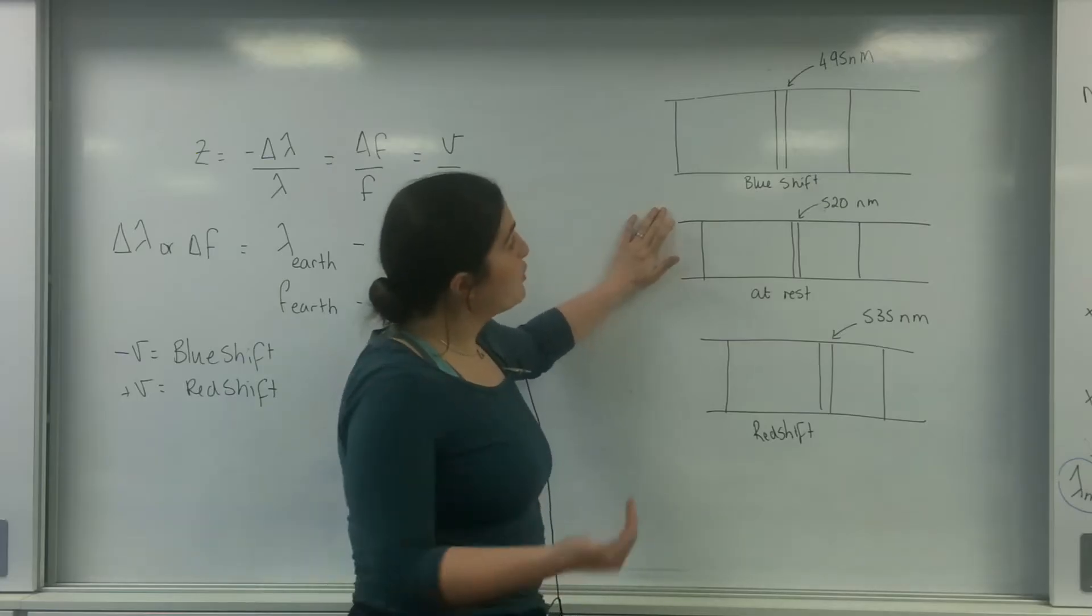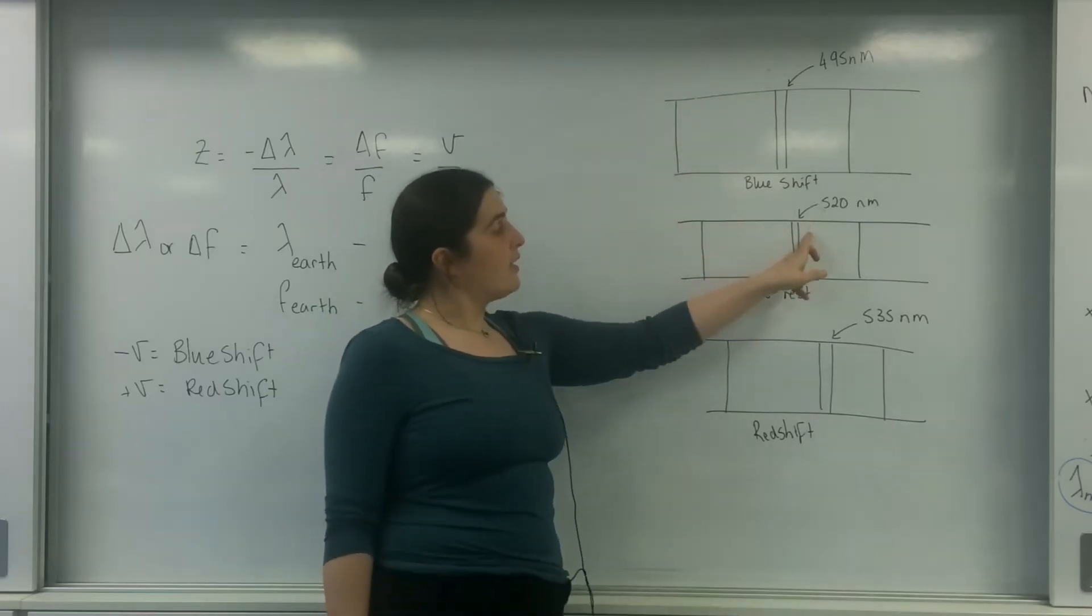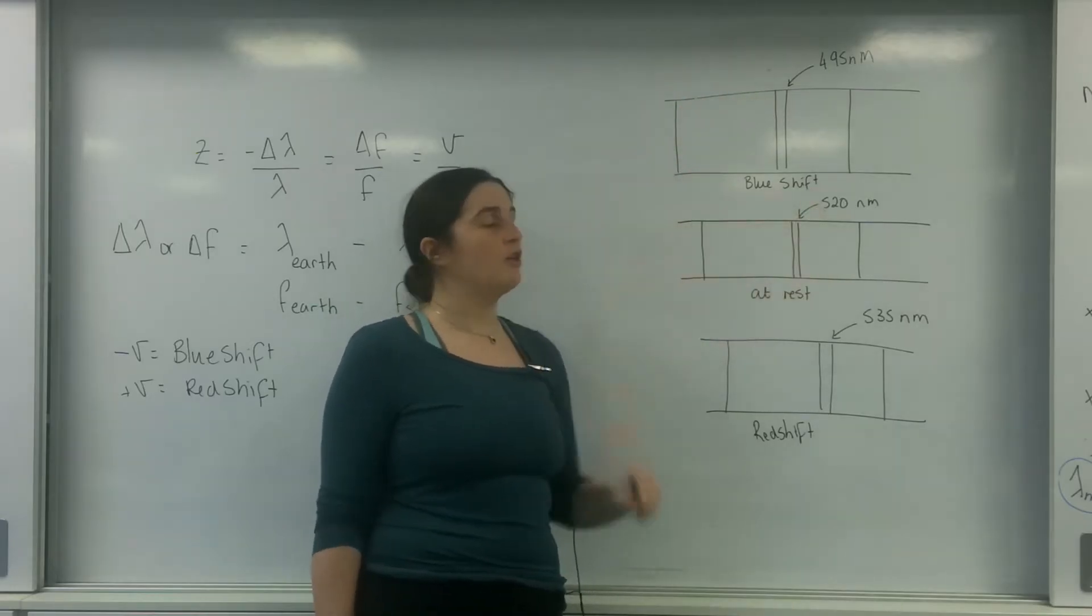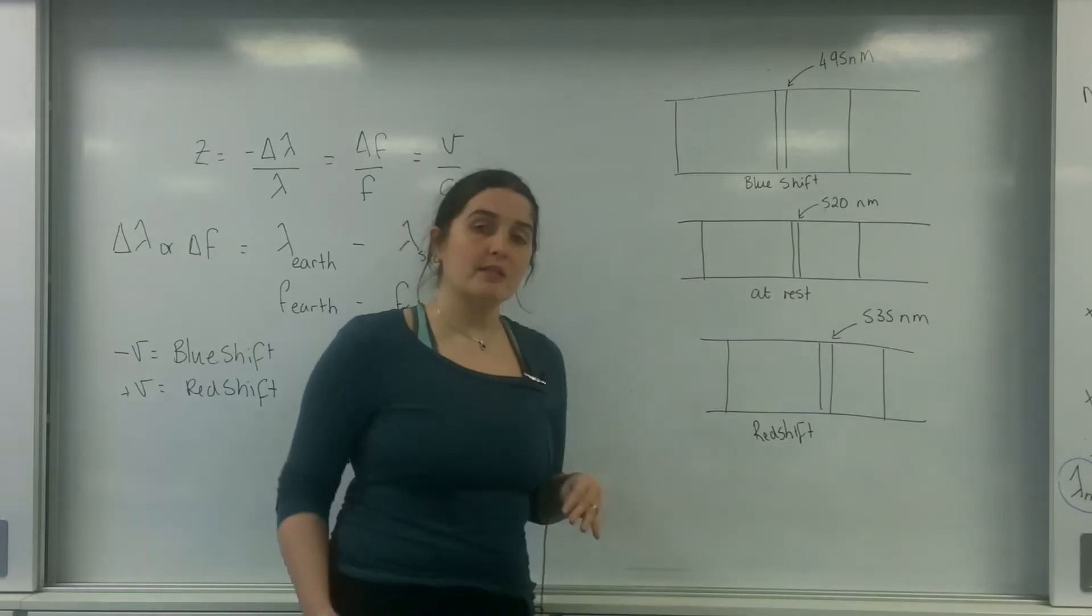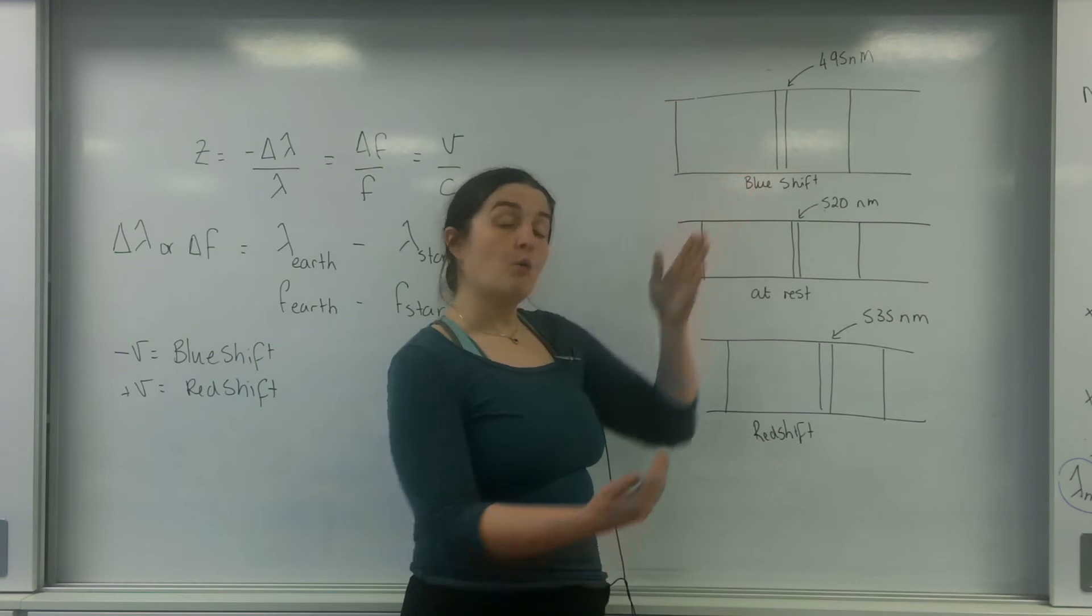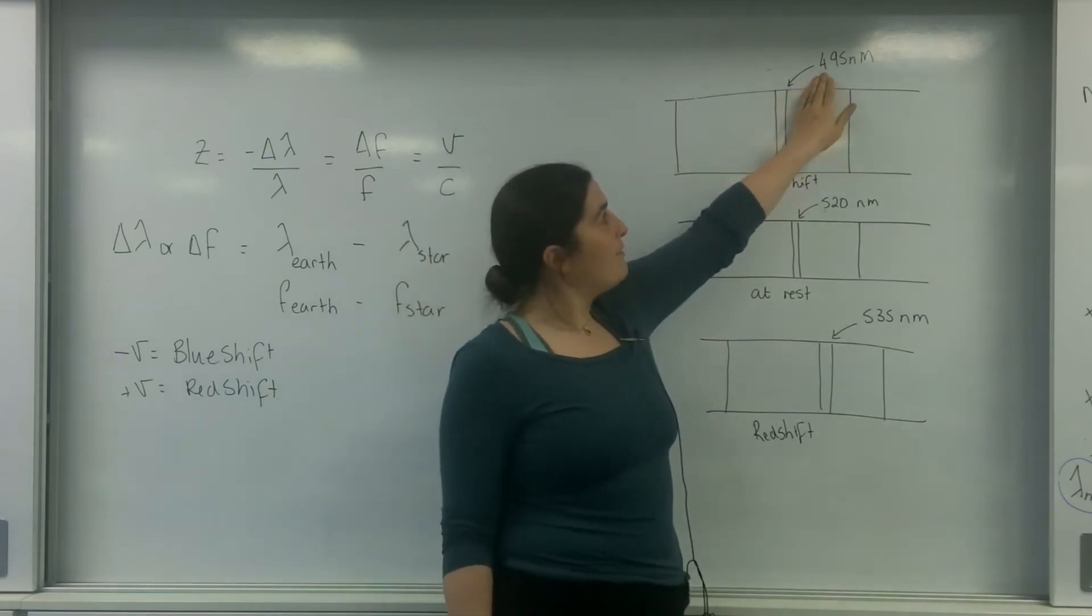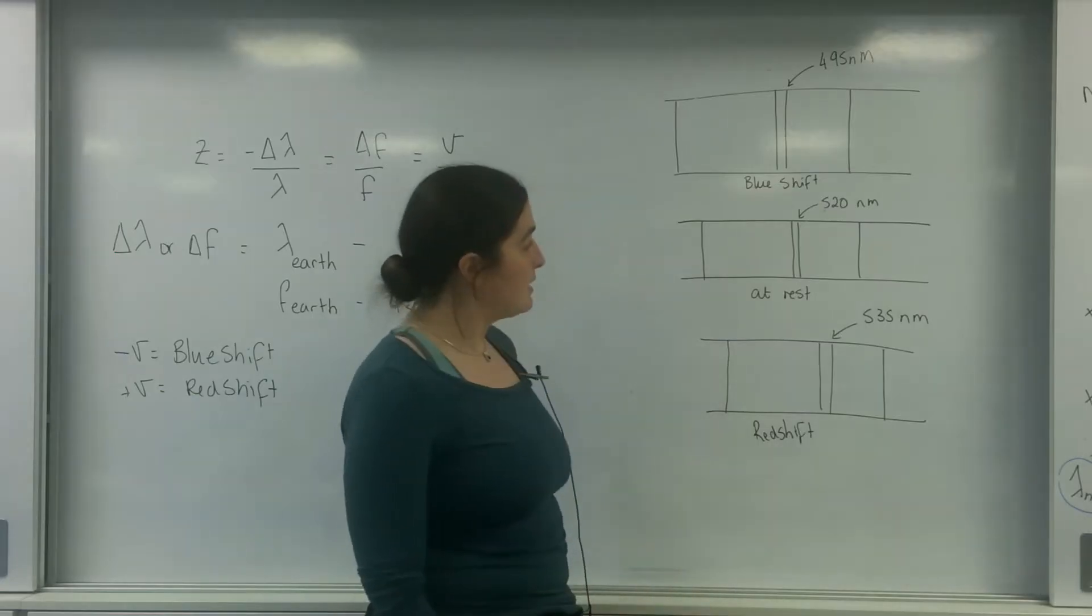If it was moving towards us, I would see a slight blue shift in this line. So this line that I've drawn here represents 420 nanometers. Whereas if the object was coming towards me, that line here will shift slightly and become a much shorter wavelength of 495 nanometers.